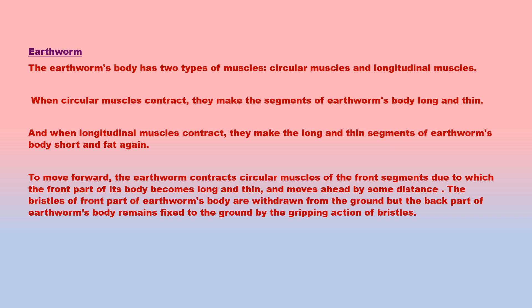The earthworm's body has two types of muscles: circular muscles and longitudinal muscles. When circular muscles contract, they make the segments long and thin. When longitudinal muscles contract, they make the segments short and fat again. An earthworm moves by alternately lengthening and shortening its body using these muscles. The tiny bristles on the underside of the earthworm's body help in gripping the ground when a part of its body moves.